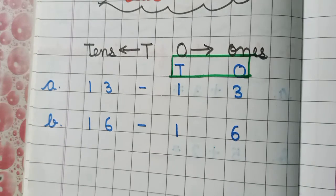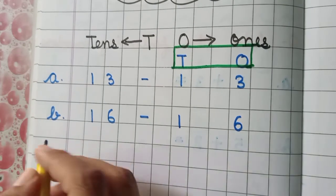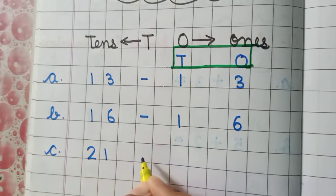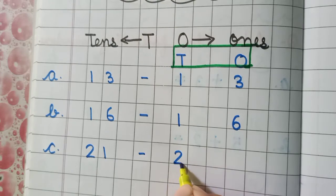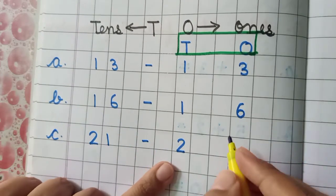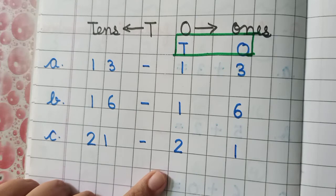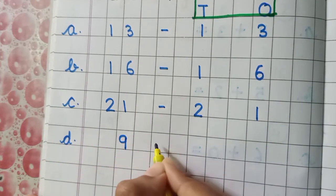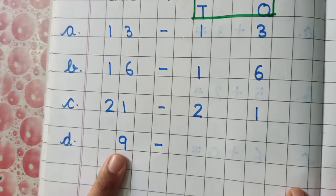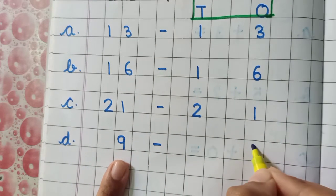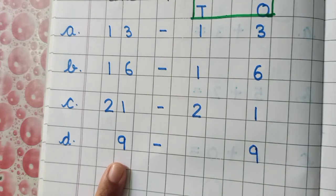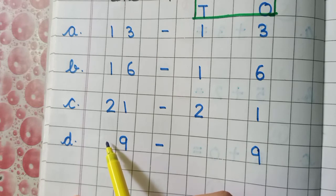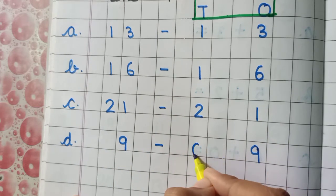Part C: Twenty-one — two will come under the tens place and one will come under the ones place. Part D: Only nine — single digit hai. Nine will come under the ones place and there is no digit in tens place, so we will write zero there.